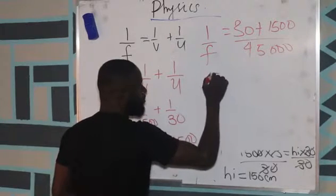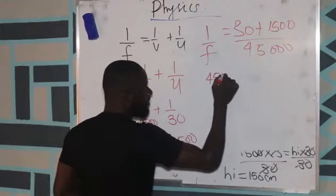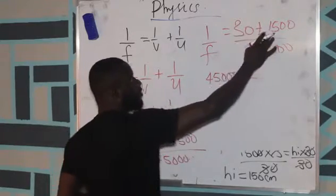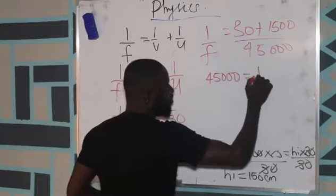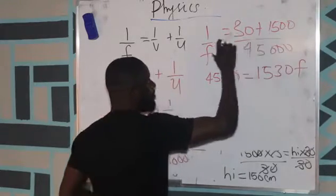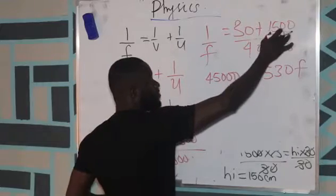So we have 45,000 is equal to 30 plus 1500. We have 1530f. So 30 plus 1500, you have 1530.